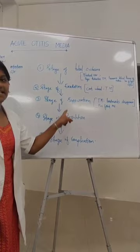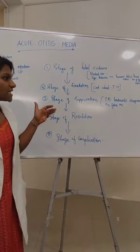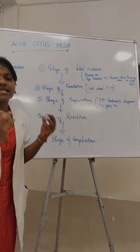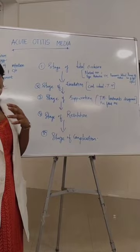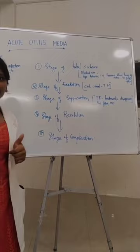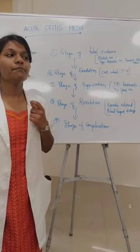Next, about the stage of resolution. In this stage, the bulged-out tympanic membrane will rupture and the pus will come out, so that the earache will get resolved. In this stage of resolution, there will be blood-tinged discharge or there will be mucopurulent discharge.